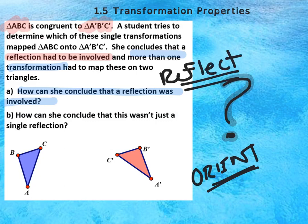Now her second statement is that she claims there was more than one transformation, there was a second item that took place. And how would she know that? Well here's why: because if it was just a reflection...